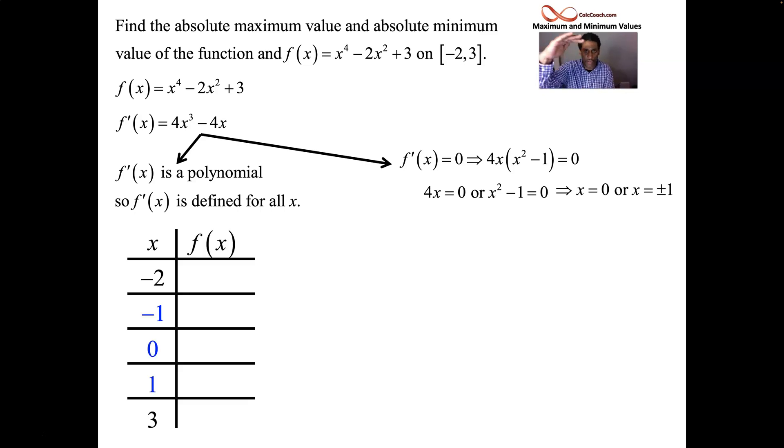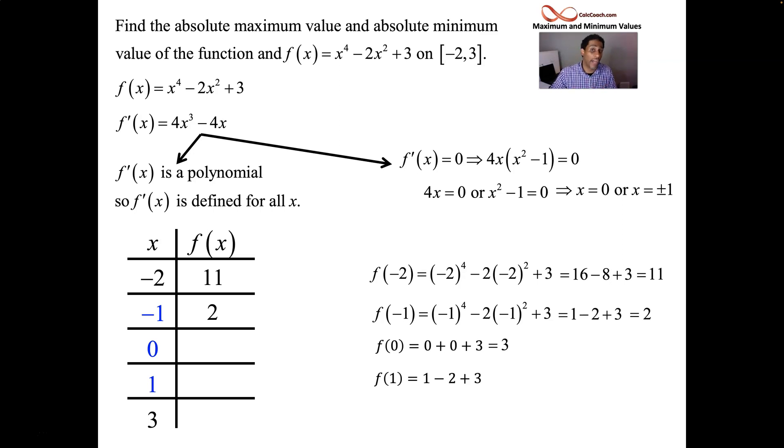Make a chart. Your endpoints and your three critical numbers, plug them into the function. I'll do it quickly with you here. Plug a -2 in, you end up with 11. Plug a -1 in, you end up with 2. Plug a 0 in, you end up with 3. Plug a 1 in, you end up adding up the coefficients there, so that's a 2. Finally, plug a 3 in, you're going to add with your 81, and then you'll take away the 18 and add on the 3, you have a 66.